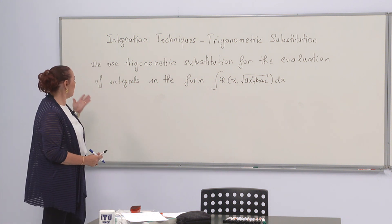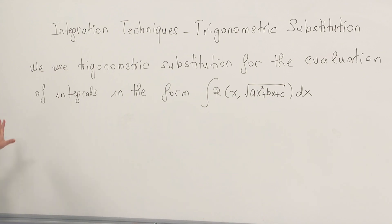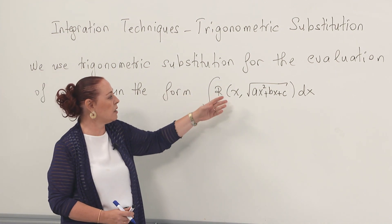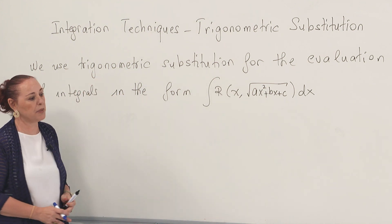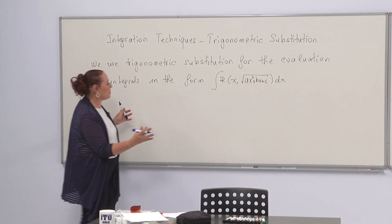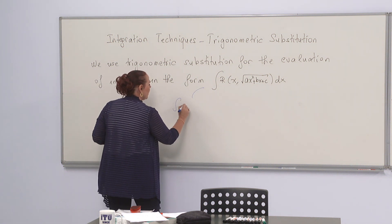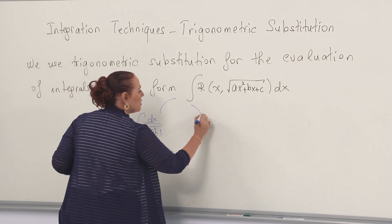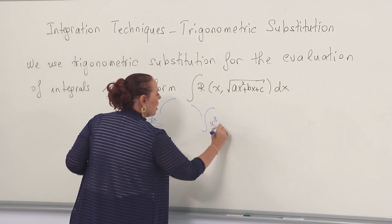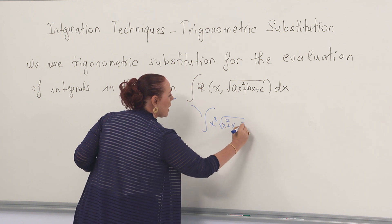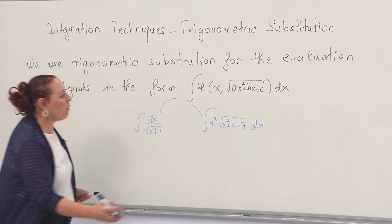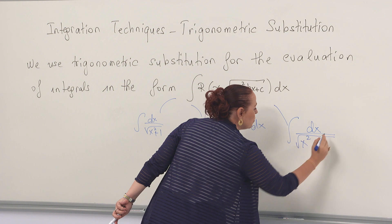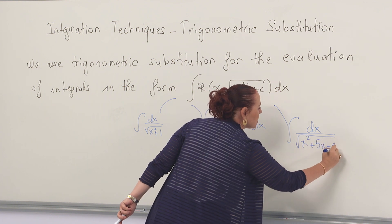Where do we use trigonometric substitution? We use them for the evaluation of integrals in the form r(x) times the square root of ax² + bx + c. For example, we use it in the evaluation of the integral of x² + x − 7 dx, or the integral of the square root of x² + 5x + 1.